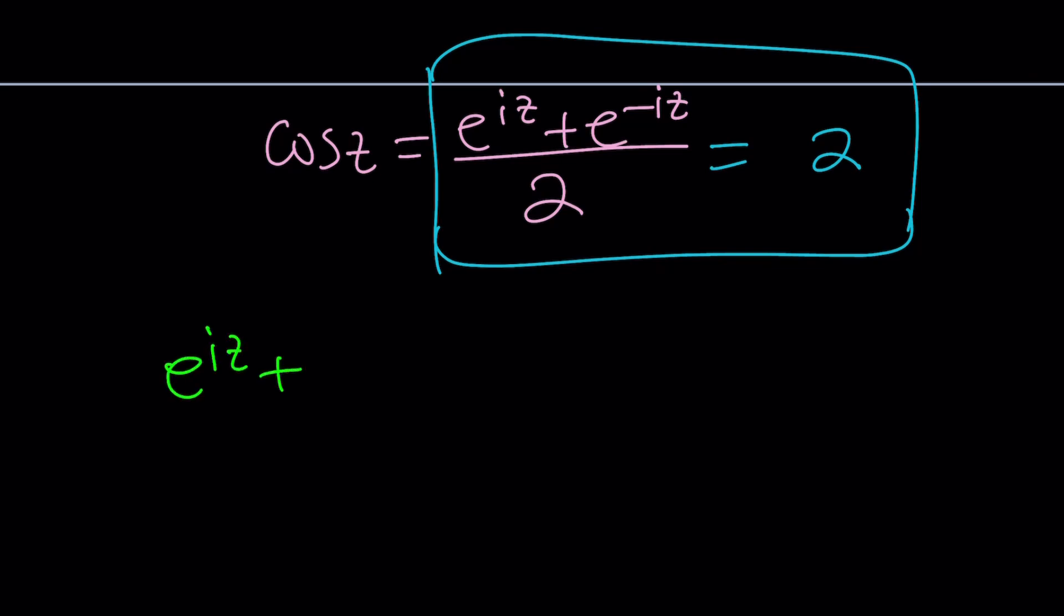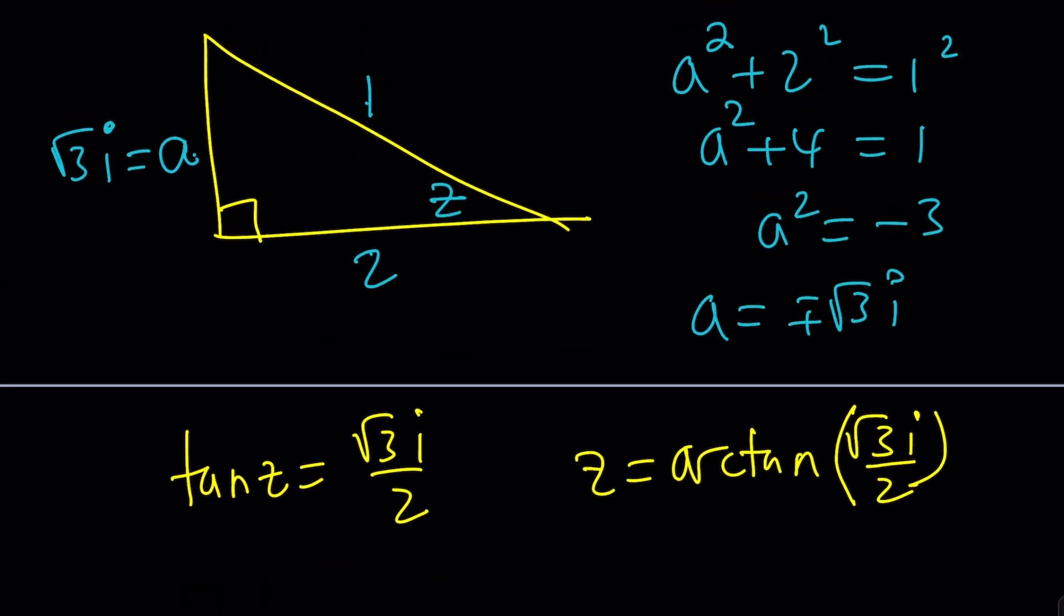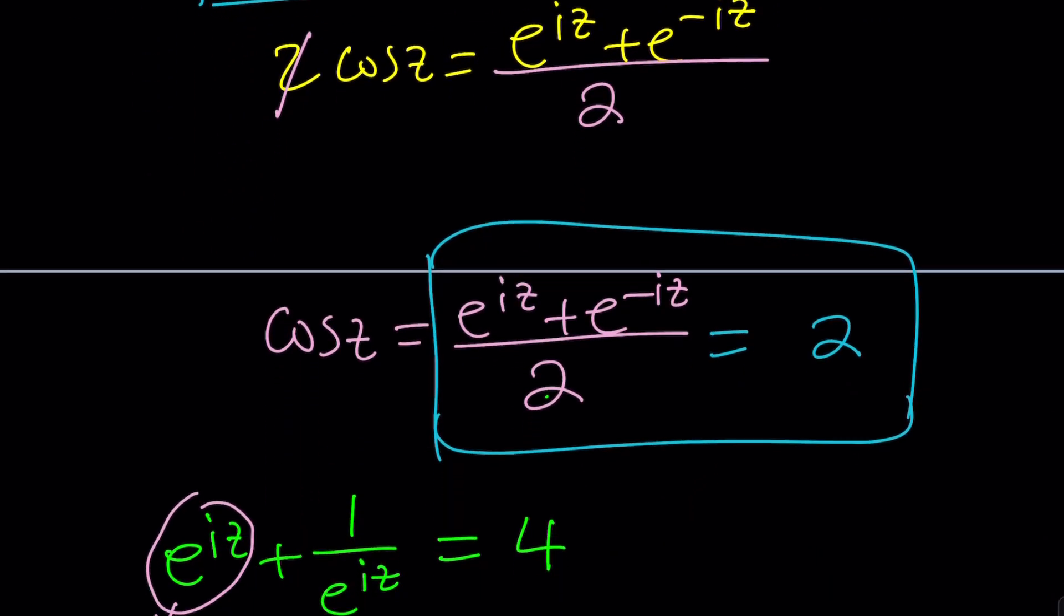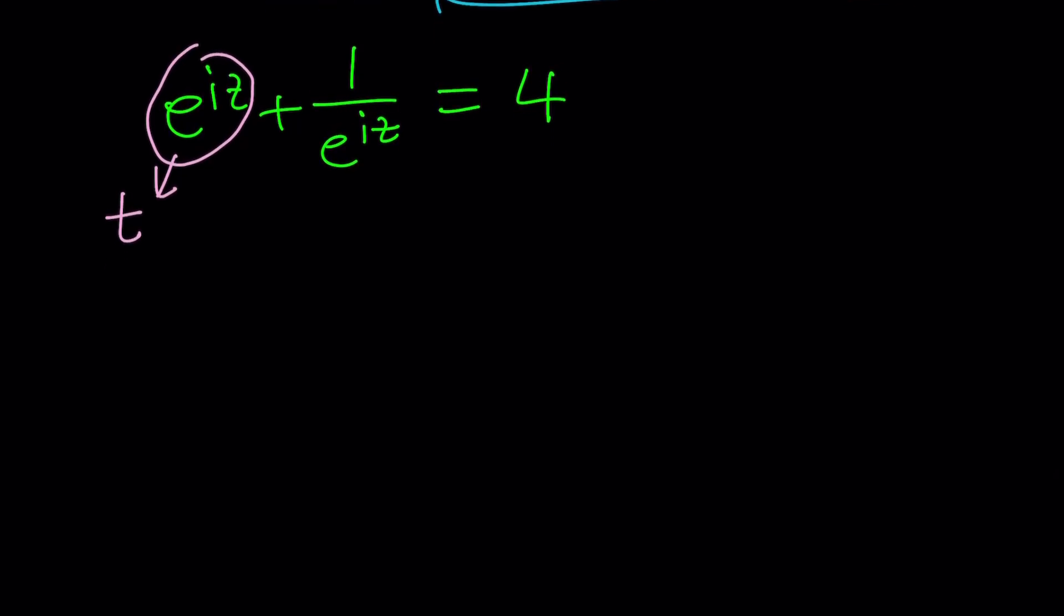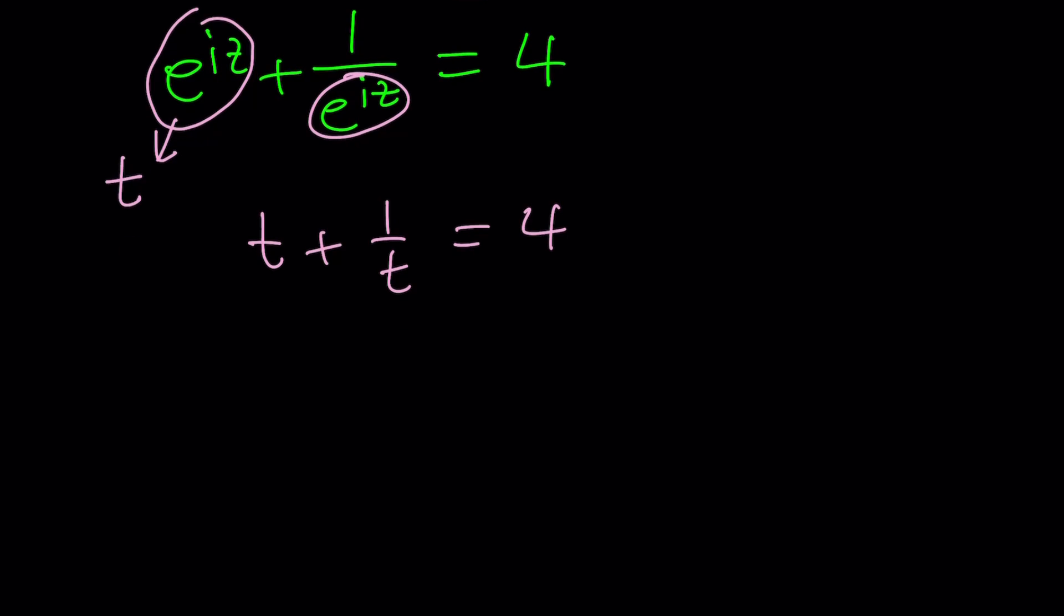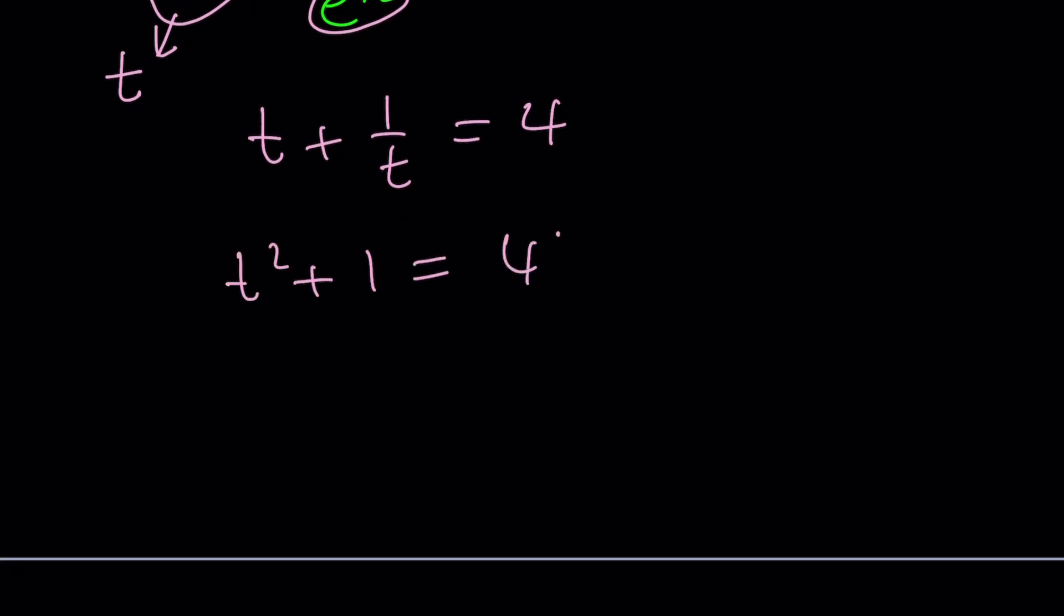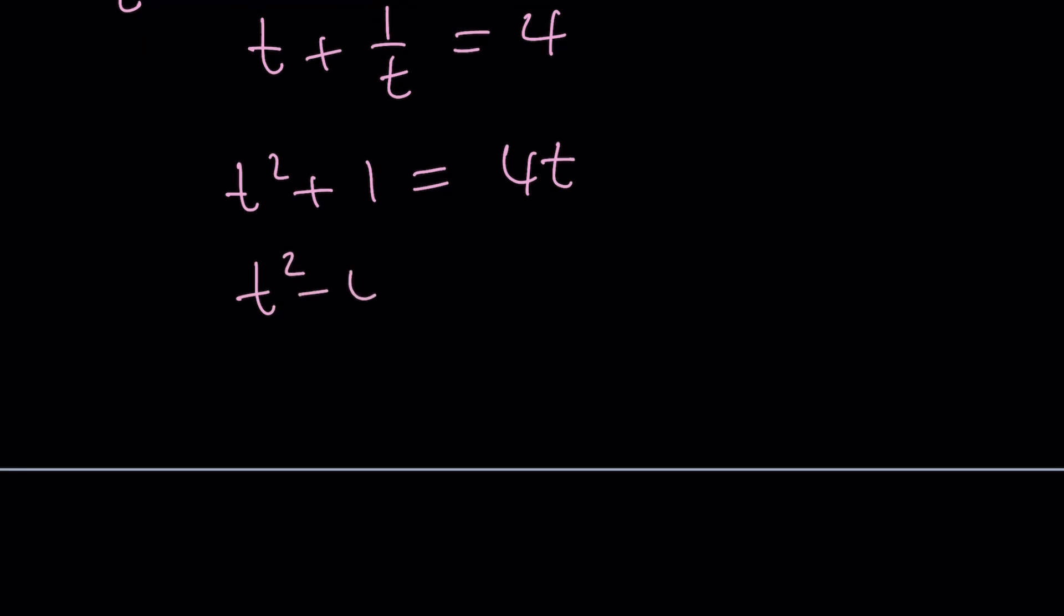First of all, let's go ahead and write this as one over e to the iz and then multiply both sides by two. So that gives us a quadratic equation if we replace e to the iz with something. How about using a t? So now if this is t, this is going to be one over t. So we have now t plus one over t equals four. And from here, we get t squared plus one equals four times t or t squared minus four times t plus one is equal to zero. Great.